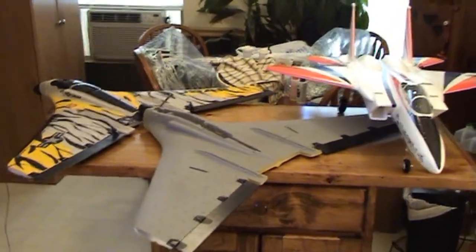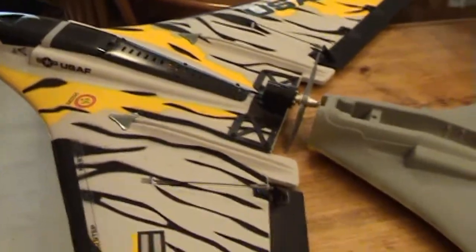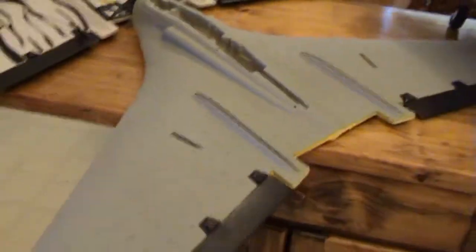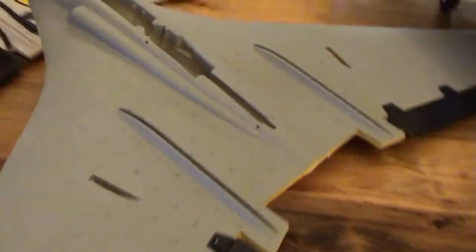Hey everybody, Eric here from Around 2 of Videos, and we've got another project going on. Here's my Striker, the brushless Striker, great flying airplane, and I had enough spare parts laying around. I decided I was going to make a second one to go along with it, and I'm going with a different paint scheme.